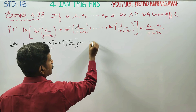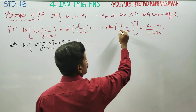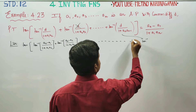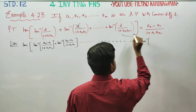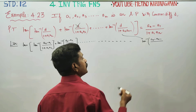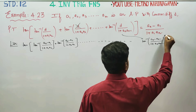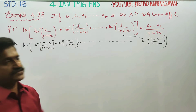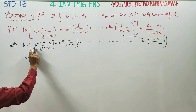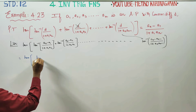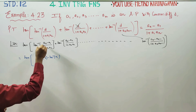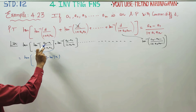The LHS is the sum: tan inverse of (a2 minus a1) over (1 plus a1·a2), plus further terms, up to tan inverse of (aₙ minus aₙ₋₁) over (1 plus aₙ·aₙ₋₁). All common difference d terms appear. Next stage: tan inverse of x minus y over 1 plus x·y equals tan inverse x minus tan inverse y. In the first step: tan inverse of (a2 minus a1) over (1 plus a1·a2).